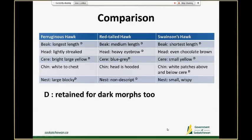Here's a table to compare some of these things across the three species. I've also noted traits with a 'D' for traits that are retained even when the birds are dark morphs. This might be a handy reference to take out into the field and use as a checklist to filter out what you might be looking at.